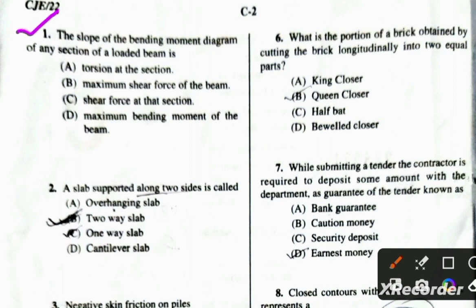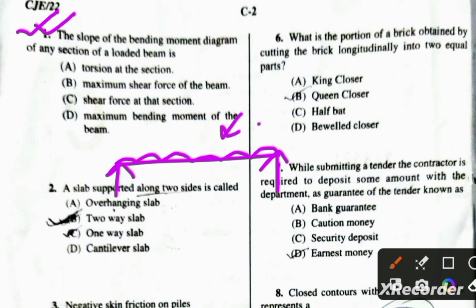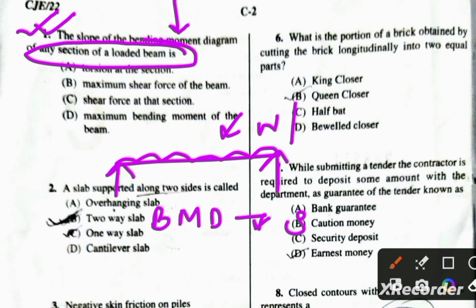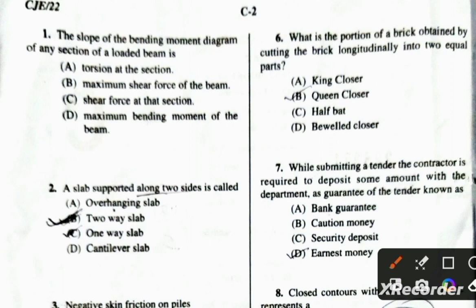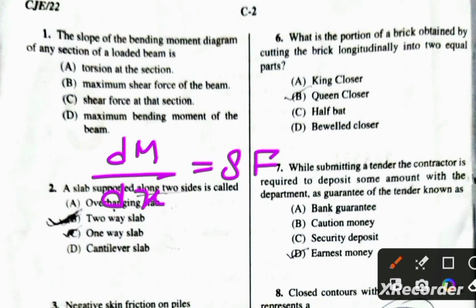The first question of the 2023 paper asks about the slope of the bending moment diagram at any section of a loaded beam. The correct answer is option C: shear force at the section. The relationship is: dM/dx equals shear force. So the slope of the bending moment diagram at any section of a loaded beam is equal to the intensity of shear force at that particular section.